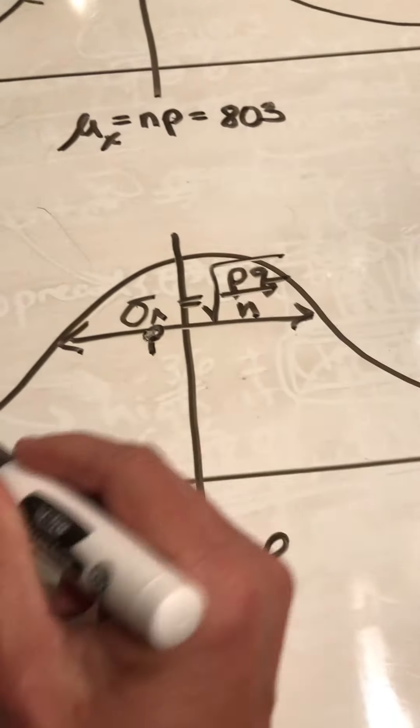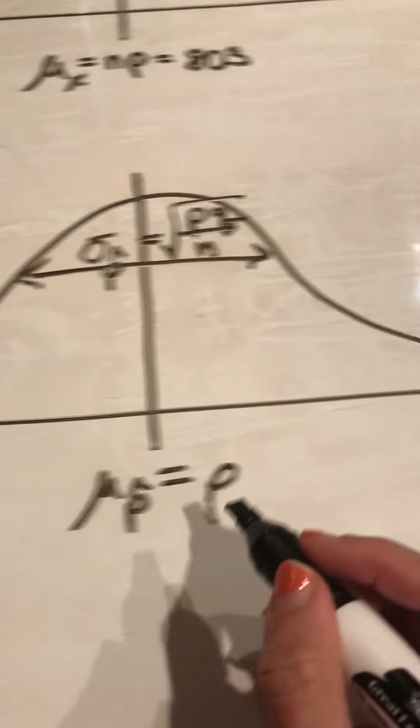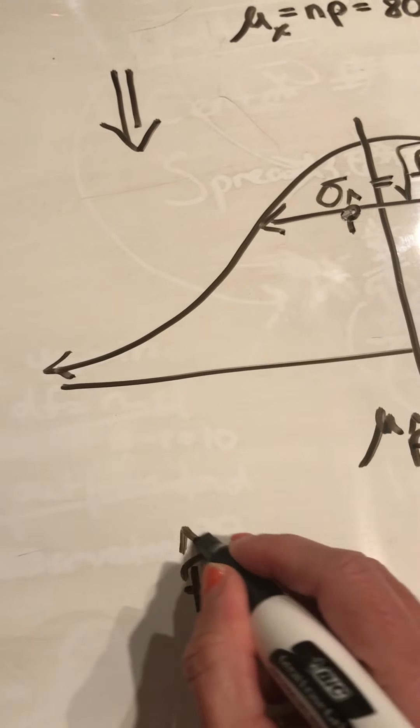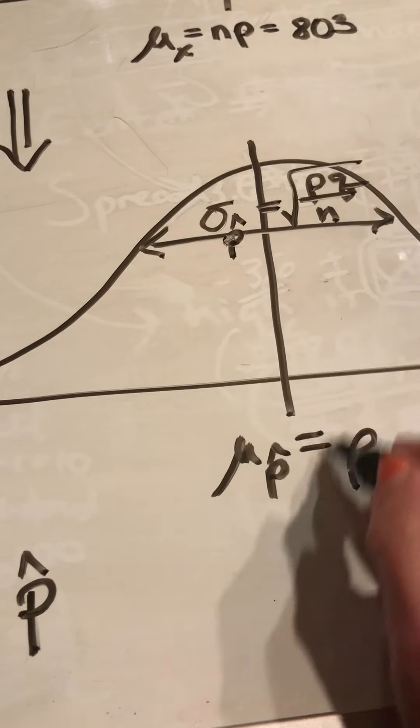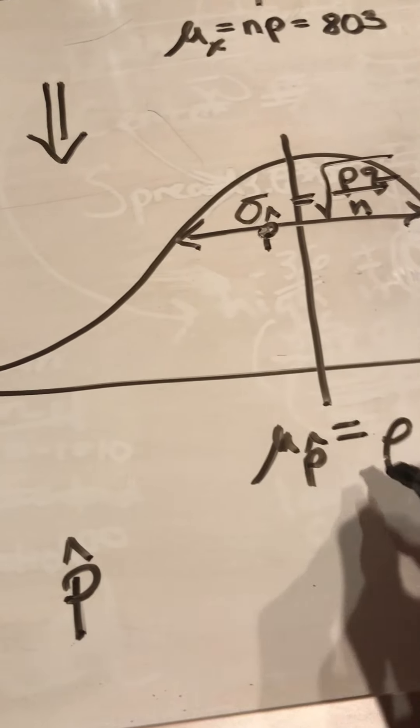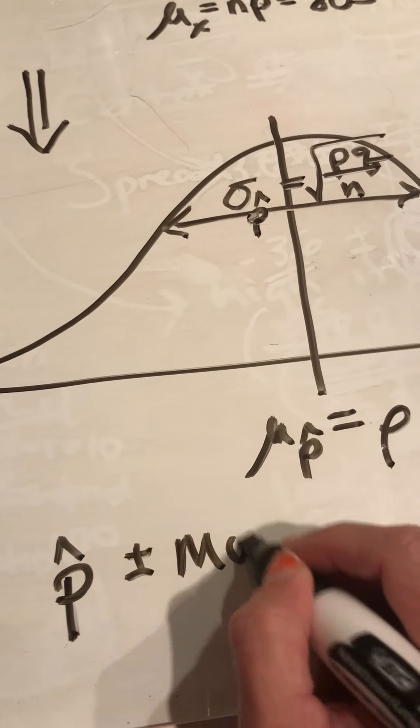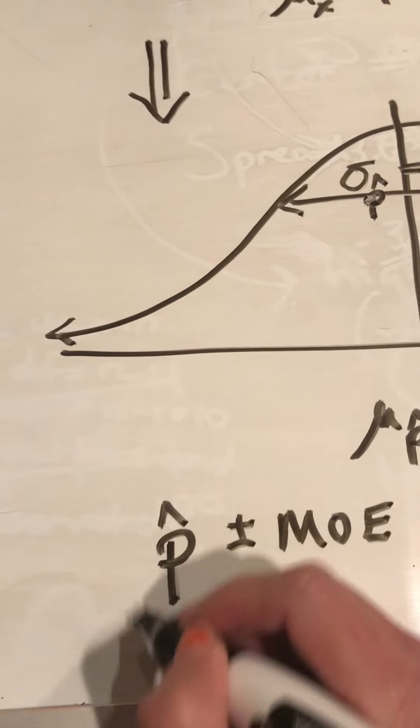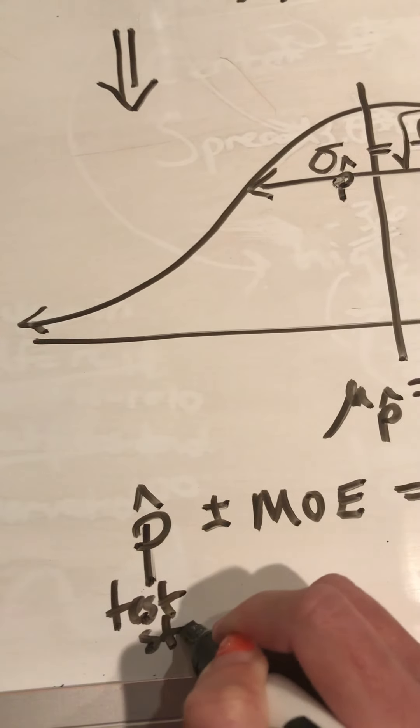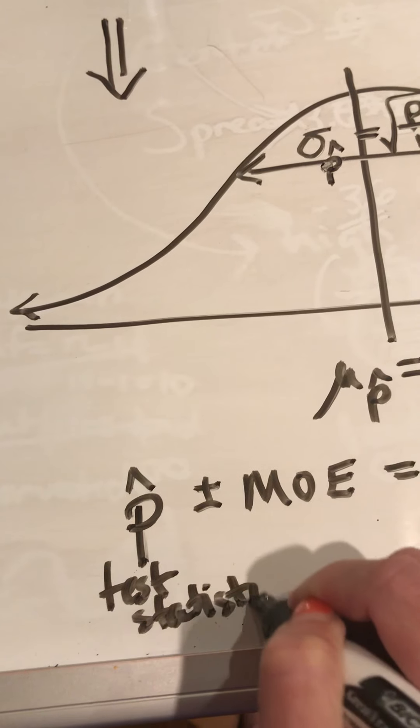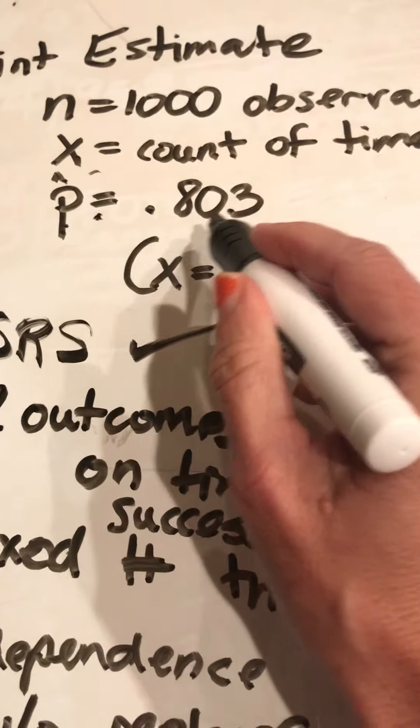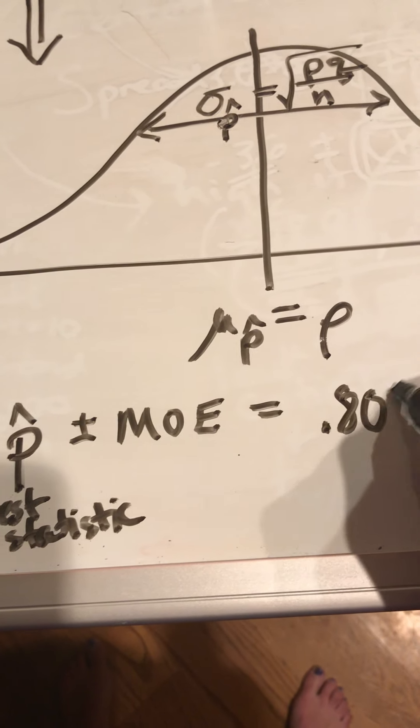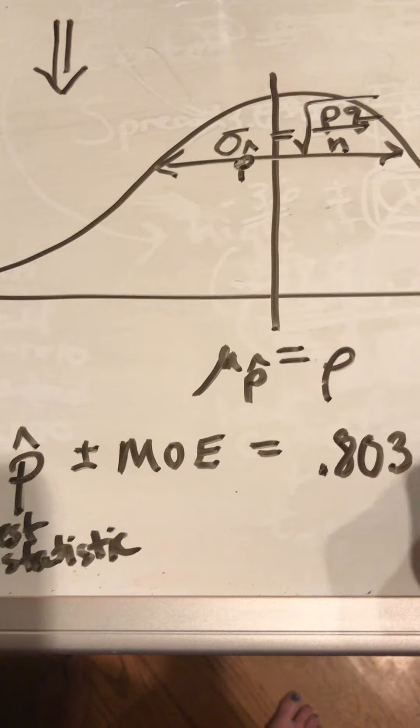So now I have a distribution for all the P-hats. So my confidence interval is going to take my point estimate. I don't know how it fits in with Rho, because I don't know what that is. I'm estimating it. Plus and minus my margin of error. My P-hat from my test statistic, from my sample, my sample had 0.803. So starting with that, best guess. No confidence. Let's add some confidence.